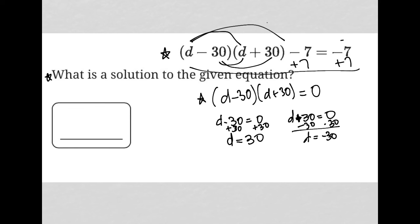So really, either of those would be true. So what is a solution, right? Not what is the solution. So that's also a little hint that you're going to have multiple possible answers. What is a solution to the given equation? Well, you could say negative 30 or you could say positive 30. So either one of those would work out.